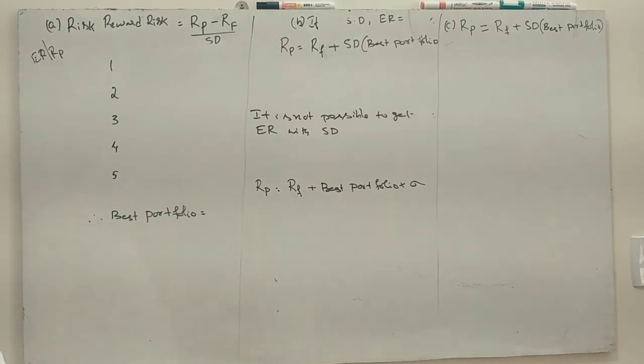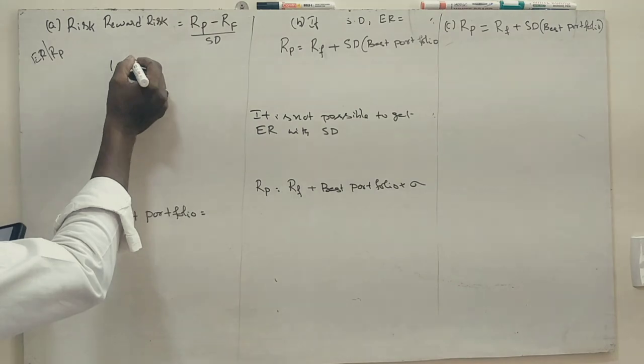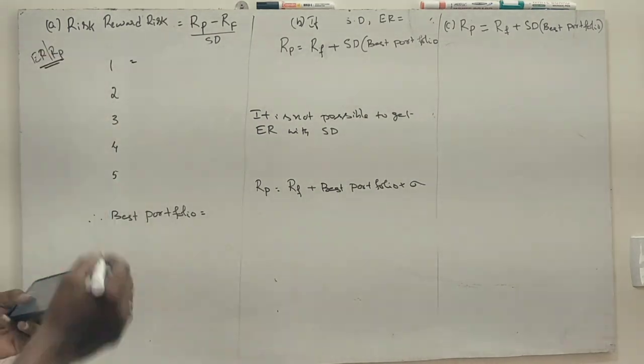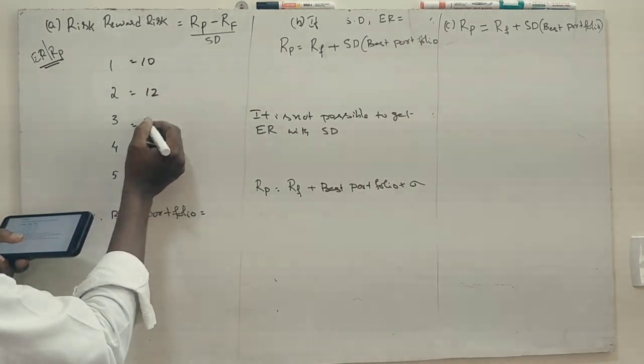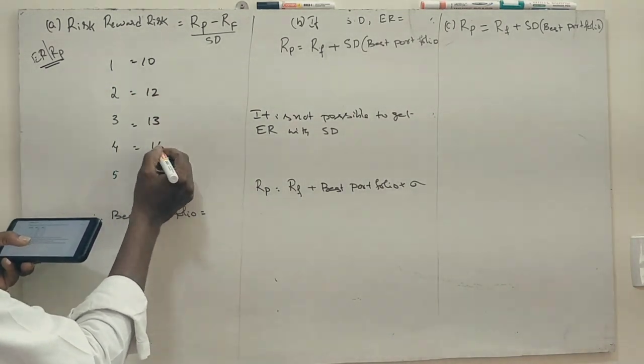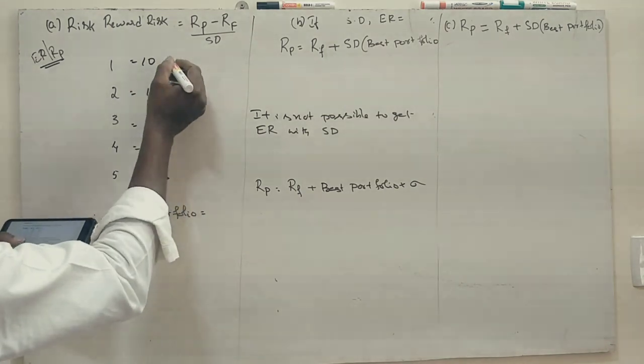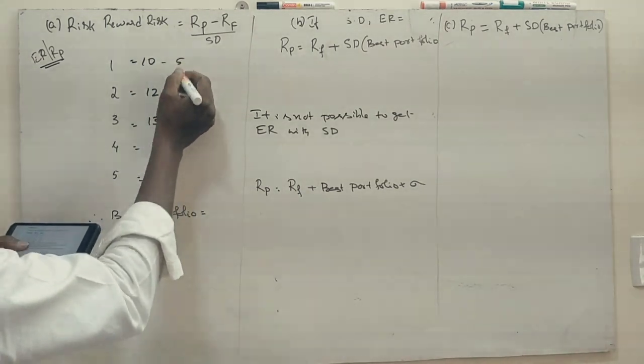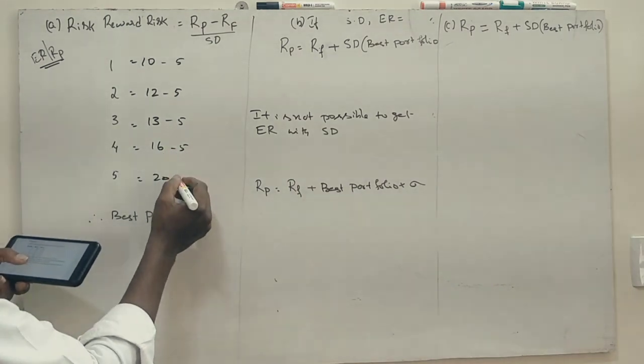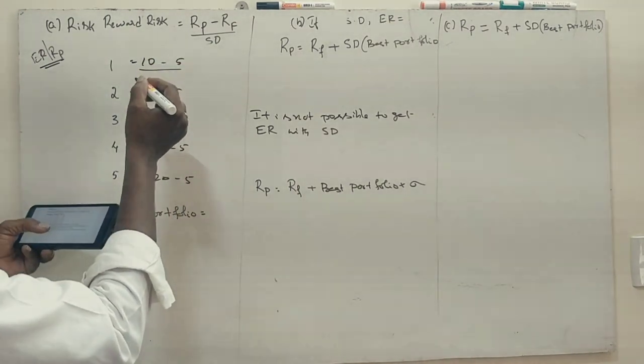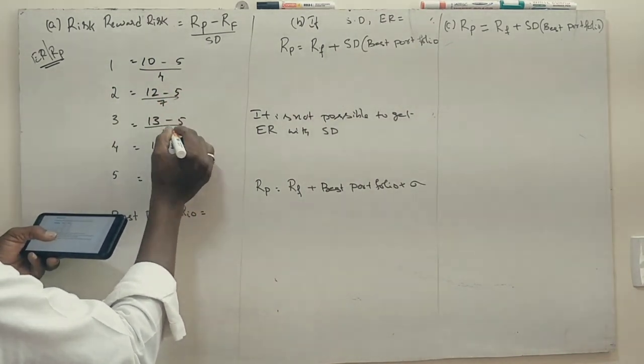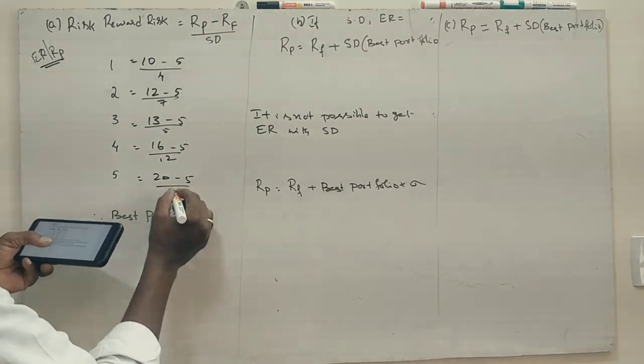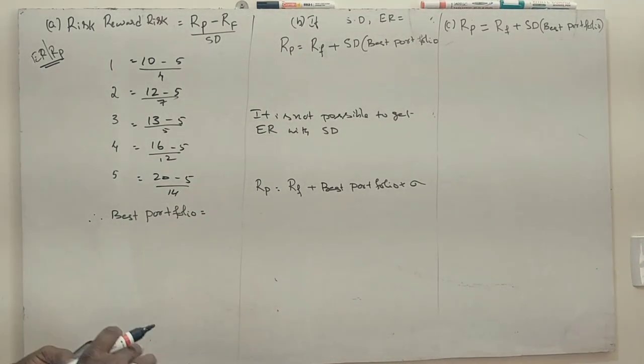First we have expected returns: 10, 12, 13, 16, 20. Risk-free return is 5%. All the standard deviations: 4, 7, 5, 12, 14. So this is the best portfolio.